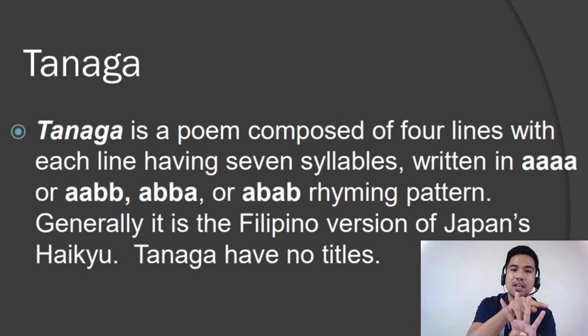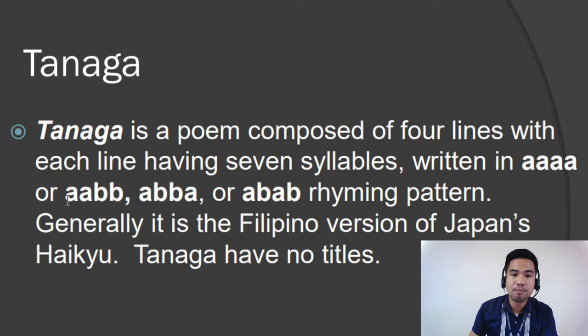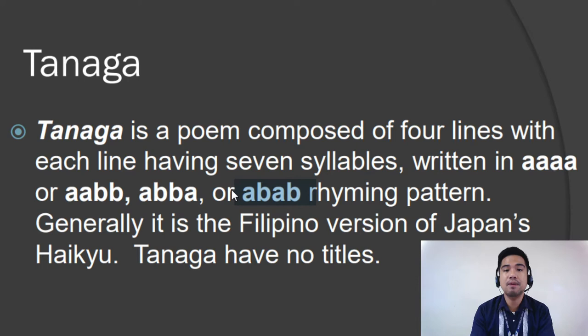So seven, fourteen, twenty-one, twenty-eight — this particular poem has twenty-eight syllables in all. And it follows a particular rhyme pattern. We have the A-A-A-A, or A-A-B-B, or A-B-B-A, or A-B-A-B rhyme pattern.